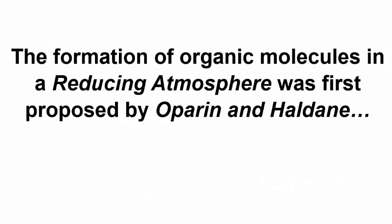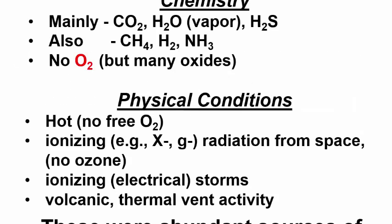Based on an analysis of the atmosphere of oxygenless and presumably lifeless planets in our solar system — Jupiter, Venus, Saturn — Alexander Oparin and J.B.S. Haldane suggested that the early Earth's atmosphere would be rich in inorganic chemicals that, with the help of an input of energy, would have seeded the oceans with organic molecules. The principal chemical constituents on a prebiotic Earth as proposed by Oparin and Haldane were mainly carbon dioxide, water vapor, hydrogen sulfide, as well as some methane, ammonia, and even perhaps some hydrogen gas. There would have been no free oxygen, but many oxides.